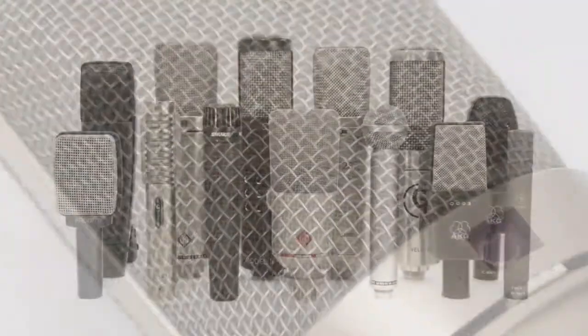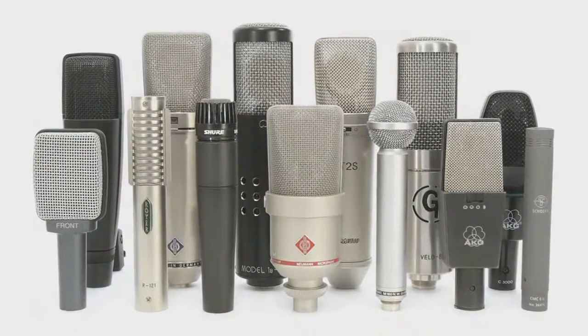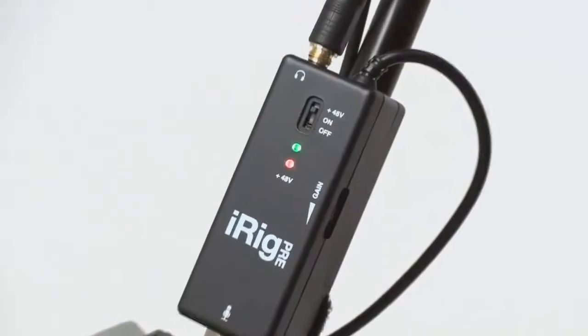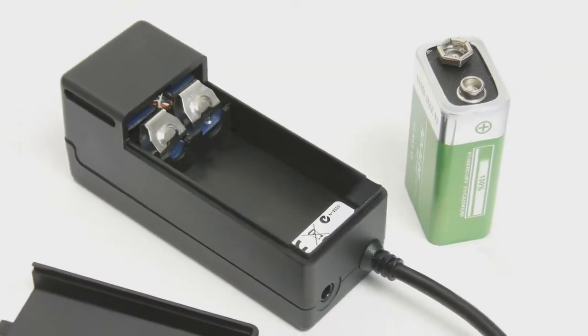Most condenser microphones, such as large diaphragm vocal microphones used in Pro Studios, require what is called phantom power. iRig Pre can provide phantom power for these types of microphones for a continuous 10 hours using a standard 9 volt battery.